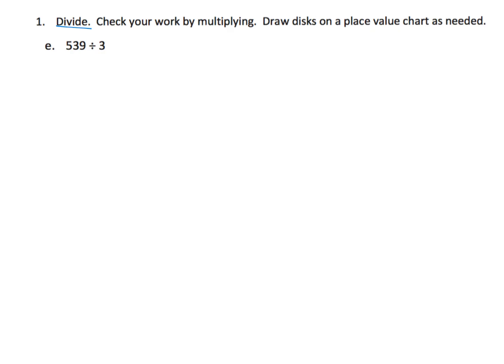So it says divide. We're going to do that using the standard algorithm. Check your work by multiplying. But then it also says you can draw your place value chart as needed. So let's start with the standard algorithm. So we're going to get 539 divided by three. Parents and teachers, it's important. Get your students saying this problem the right way. A lot of students will say this one perfectly. 539 divided by three.